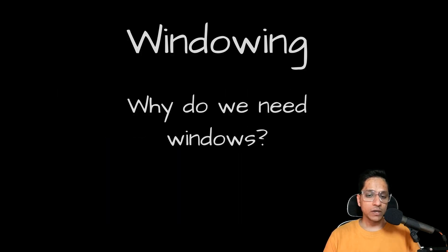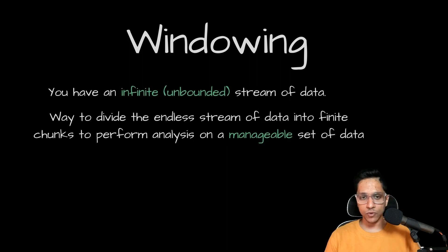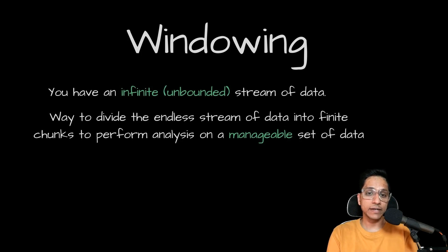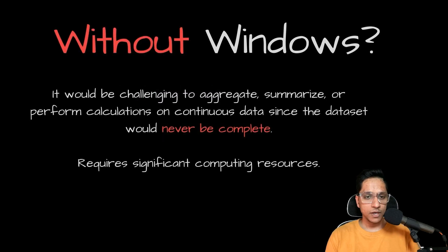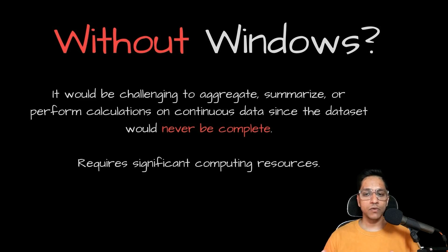Now let's explore windowing, which is another very crucial concept in stream processing. Streams, as we know, are unbounded by nature. However, business questions are based on time — for example, the number of clicks a particular product category receives in a five-minute window, which can be used to identify popular product categories in real time. Windowing allows us to divide a continuous stream of data into finite chunks for analysis. Without windows, performing calculations or summarizations on continuous data would be very challenging and resource-intensive.